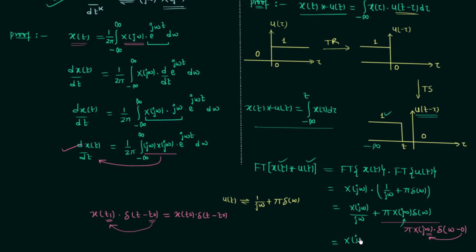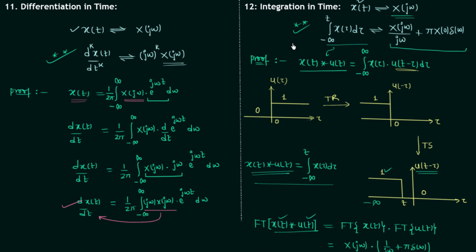So the final result is X(jω)/jω + π·X(0)·δ(ω), which is the Fourier transform of the integration from minus infinity to t of x(τ) dτ. This is the same as the property stated earlier, so we have proved the integration in time property. If you have any doubt, you may ask in the comment section. I will end this lecture here — see you in the next one.